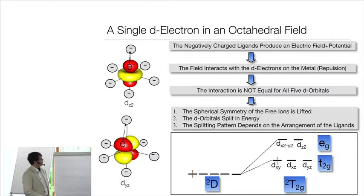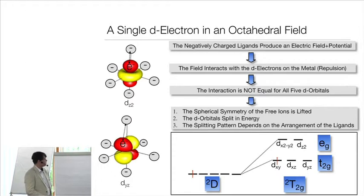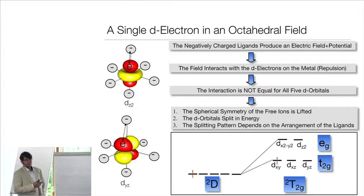The repulsive interaction is not equal for all five d-orbitals. The average distance from the electron in the d_{z²} orbital to the ligand is shorter — because it sits on the coordinate axes — compared to an electron in d_{xz}, d_{yz}, or d_{xy}, which sit between the axes. That means an electron in d_{yz} is less strongly repelled than one in d_{z²}. As a result, the five-fold degeneracy of the d-orbitals is lifted by the ligand field.